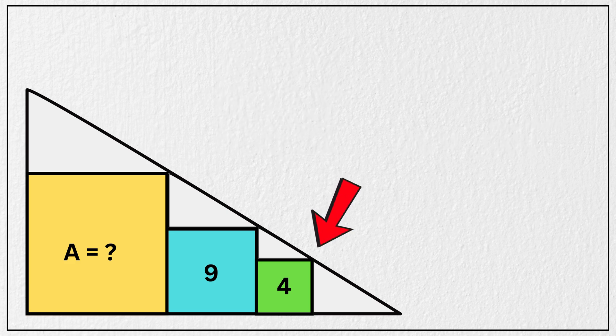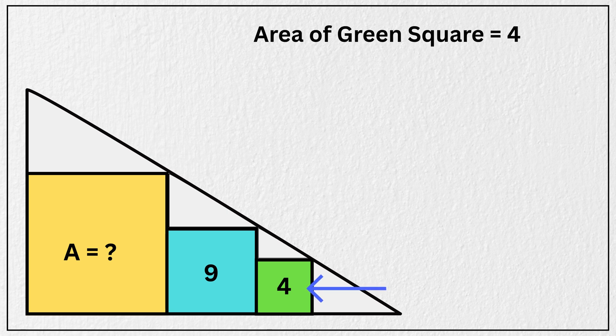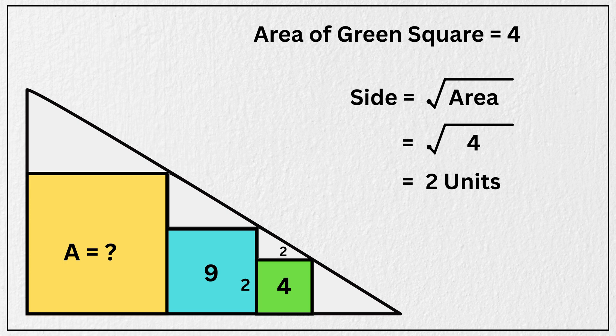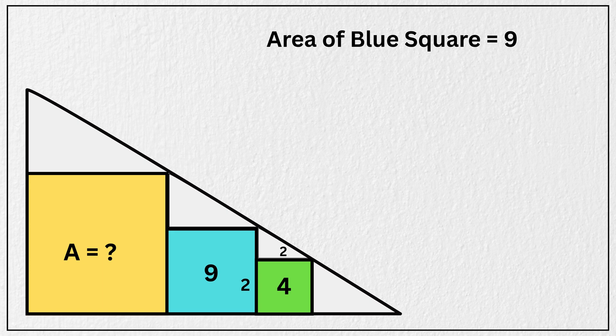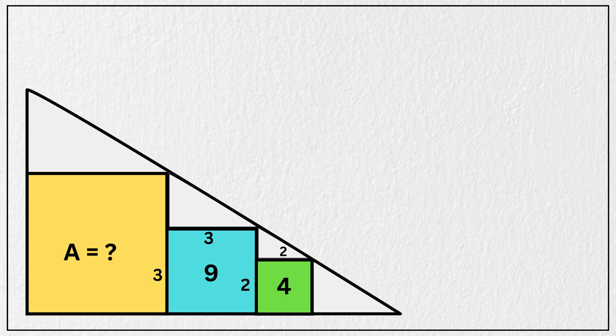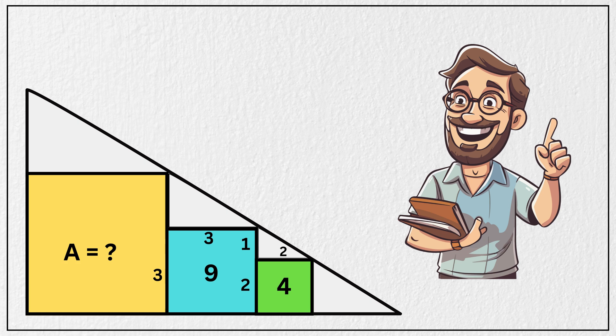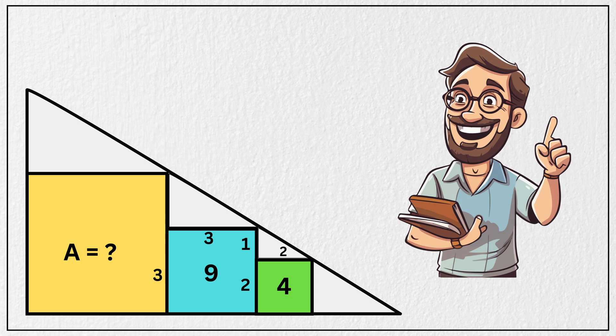Now let's start from this smallest green square. Area of this small square is 4, which means each side of this must be the square root of 4, that is 2 units. Now look at this middle square. Its area is 9, so each side is the square root of 9, that is 3 units. Now if this is of length 3 units, and this is of length 2 units, then this remaining side length must be equal to 3 minus 2, which is 1 unit. Let's label that part as 1 unit, and update our figure accordingly.